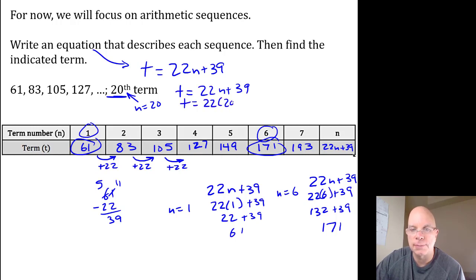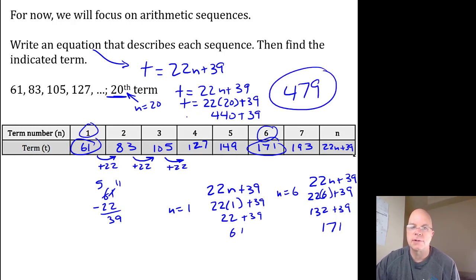22 times 20 is 440, plus 39, that's 479. That would be the answer to that question.